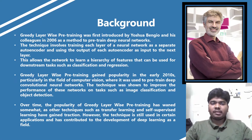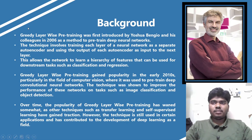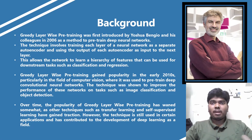The way in which we can produce optimal solutions using deep learning neural networks involves training each layer of a neural network as a separate autoencoder and using the output of each encoder as input to the next layer. If we consider a particular input x, after training we get an output x-dash, and we take that x-dash as input to the next stage.